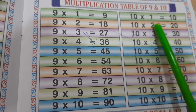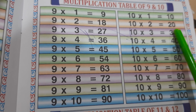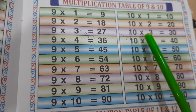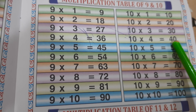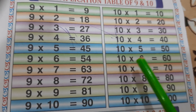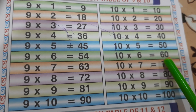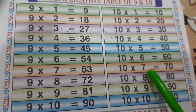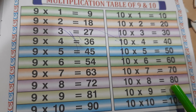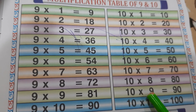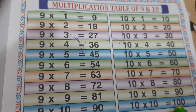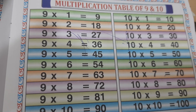10 1's are 10, 10 2's are 20, 10 3's are 30, 10 4's are 40, 10 5's are 50, 10 6's are 60, 10 7's are 70, 10 8's are 80, 10 9's are 90, 10 10's are 100. Thank you.